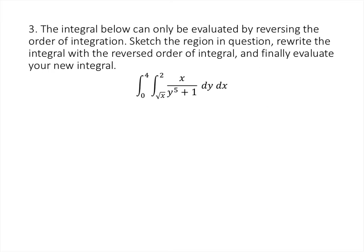This time we're given an iterated integral. We need to sketch the region it represents and then reverse the order of integration to get an integral that's actually doable. The integral has y to the fifth plus 1 in the denominator, which we don't know how to integrate directly — it would require some horrible partial fractions approach. But when we reverse the order of integration, it won't be so bad. The inner integral shows that the vertical slice goes from y equals the square root of x to y equals 2.